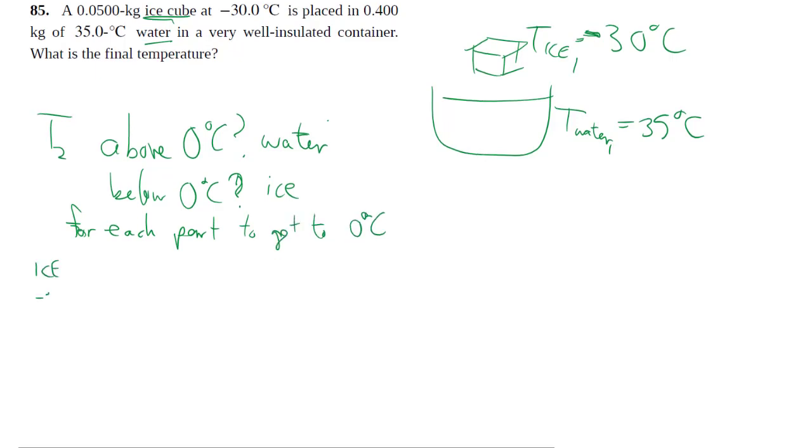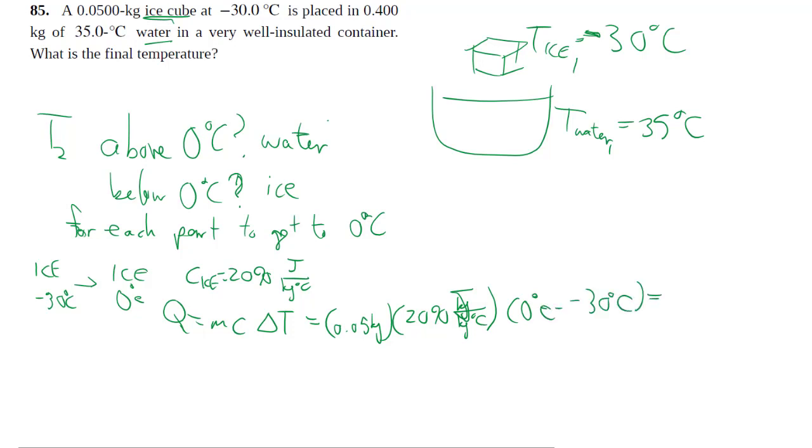So for ice to go from negative 30 degrees celsius to zero degrees celsius, the specific heat for ice, it's easy to look up. No phase change here, so specific heat. Minusing a negative, positive as you expect because you have to add in heat to raise the temperature.